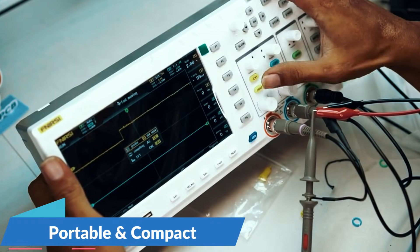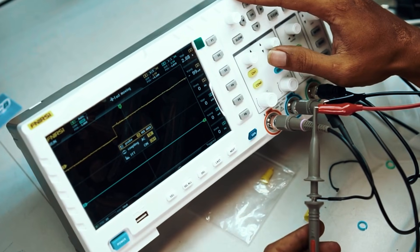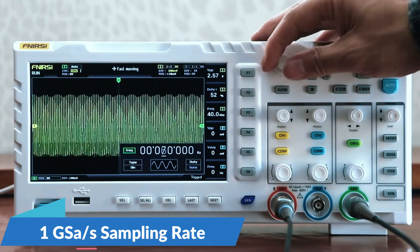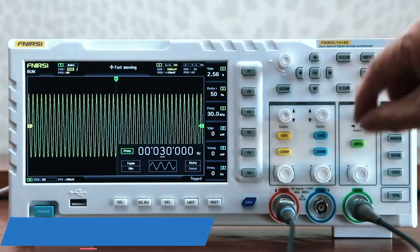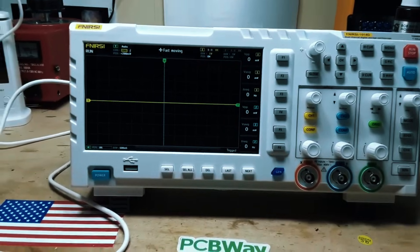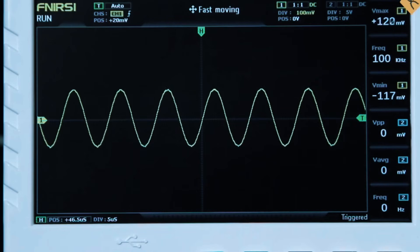Plus, its portable and compact build makes it easy to carry around, making it a great option for home labs or on-the-go repairs. For a budget-friendly scope, the 1 giga samples per second sampling rate is surprisingly fast and reliable. The touchscreen UI makes navigation intuitive, especially for those new to oscilloscopes.